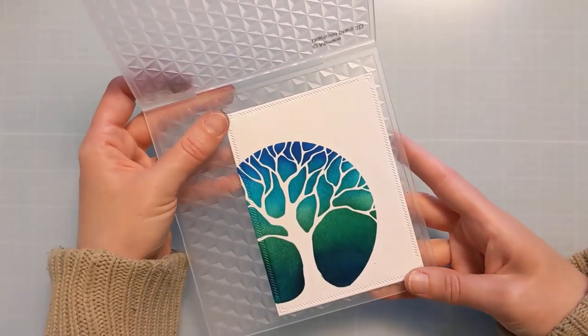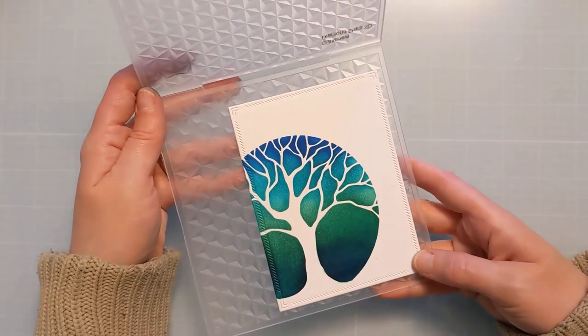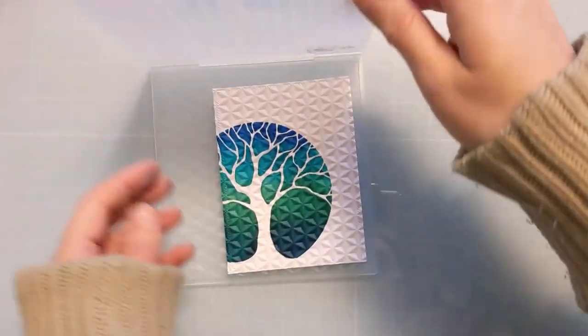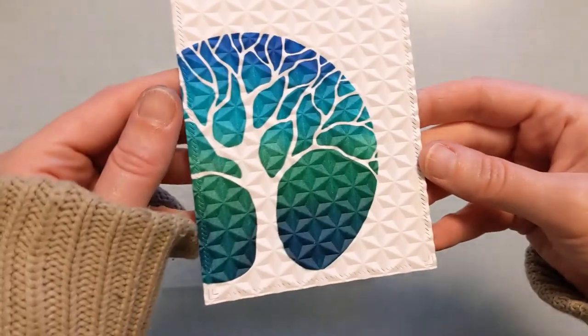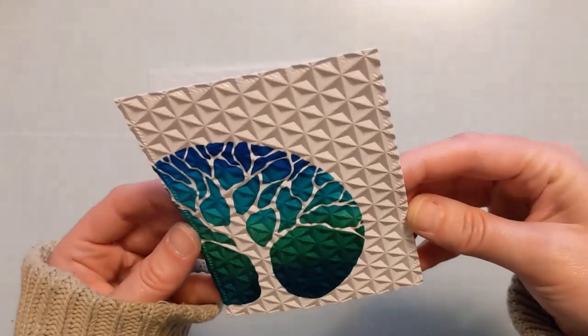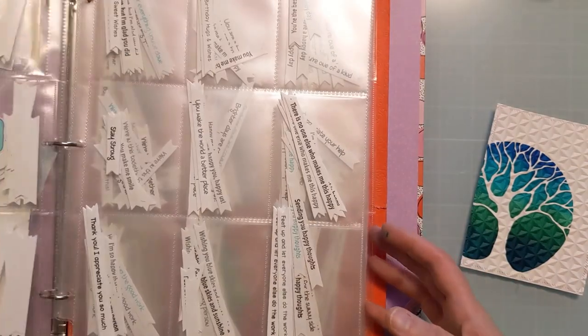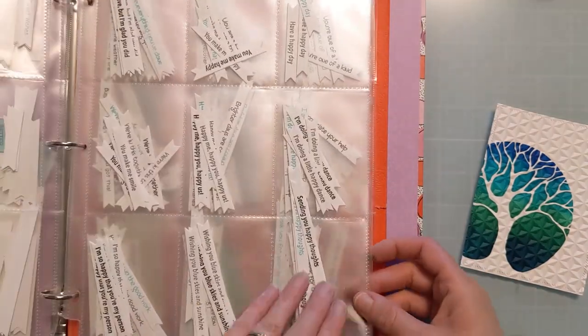So now I'm going to add the next level of interest into this card, and I'm going to pop this panel into the diamond stars. This is a really cool, kind of new to me, embossing folder from Altenew. And I ran that through off screen through my die cutting machine.